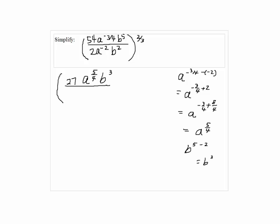It is also on top of fraction bar. Since we have only one denominator, we just have to write this as (27a^(5/4)b^3) raised to the 2/3.